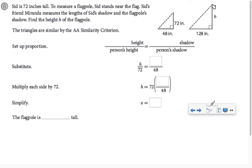Similar idea in part B. Sid is 72 inches tall. He measures a flagpole by standing near the flag and measures his shadow. It is 48 inches. He measures the flagpole's shadow. It is 128.